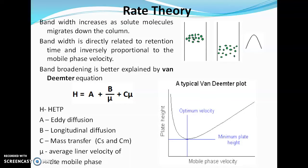This is the typical Van Deemter plot, where an optimum mobile phase velocity is required to get the maximum number of plates and minimum plate height (minimum HETP). When eddy diffusion, longitudinal diffusion, and resistance to mass transfer are minimized and there is an optimum mobile phase velocity, HETP will be minimum. When HETP is minimum, the number of theoretical plates is maximum, giving better separation.